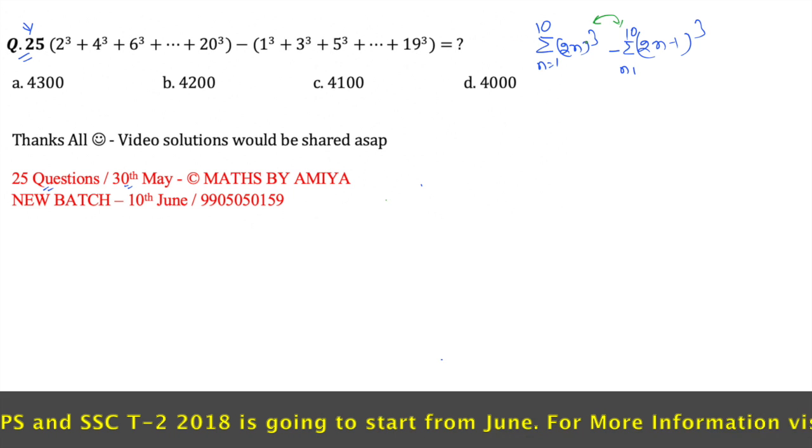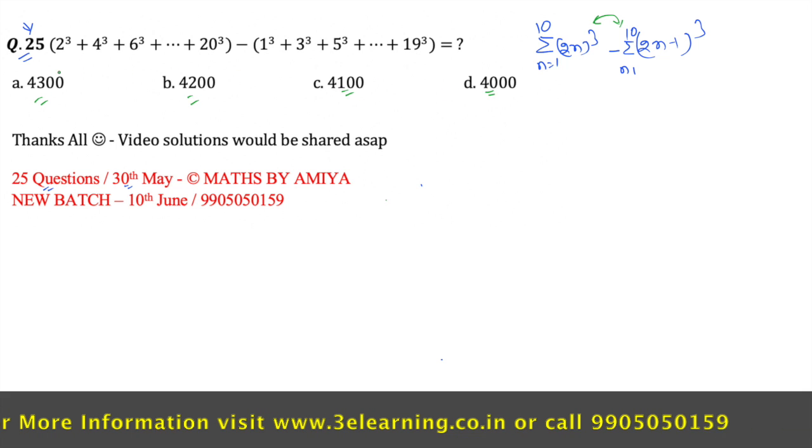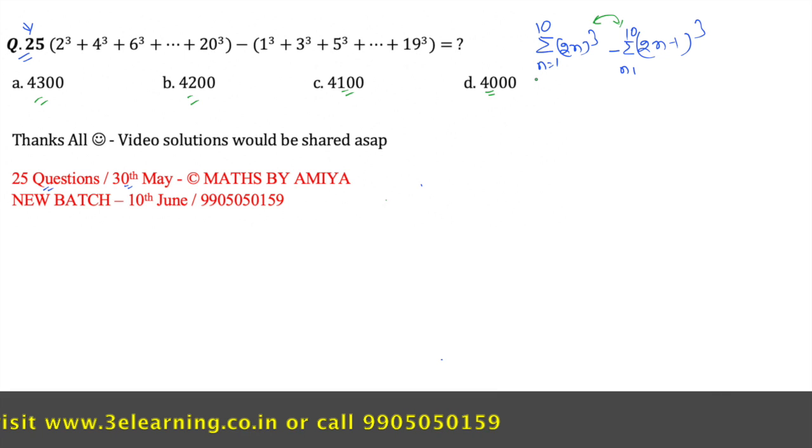This one is time calculative, so you check the options. If you check the options, all options have a different digital sum. So why not use the 9 ka digital sum? I am just opening 2 cube minus 1 cube.